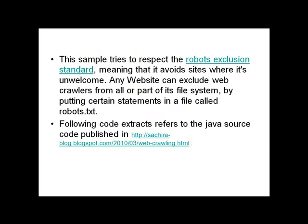The following two slides contain a sample source code of a web crawling algorithm implemented in Java. This sample tries to respect the robots.txt standard, meaning that it avoids sites where it is unwelcome. A website can exclude web crawlers from all or part of its file system by putting certain statements in a file called robots.txt.